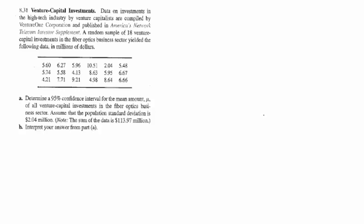They want to determine a 95% confidence interval for the mean amount mu of all venture capital investments in the fiber optics business sector. Assume that the population standard deviation is 2.04 million and the sum of the data is 113.97 million. Then it wants us to interpret the answer.